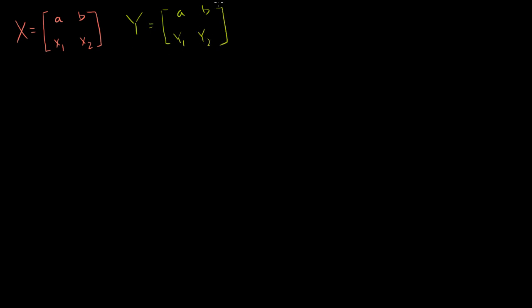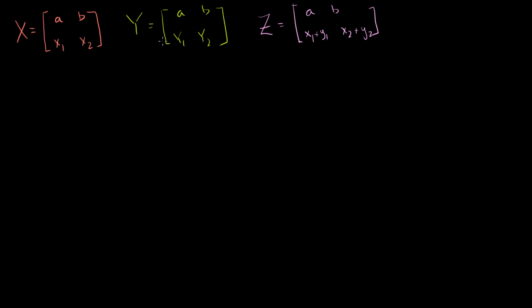And let's say we have a third matrix Z that's identical to the first two matrices on the first row — so A, B — but on the second row it's actually the sum of the two rows of X and Y. So this entry is going to be X1 plus Y1, and this entry is X2 plus Y2. I want to be very clear: Z is not X plus Y. All of the terms of Z are not the sum of all the terms of X and Y — I'm only focusing on one particular row. Determinants are linear on operations you do to just one row.